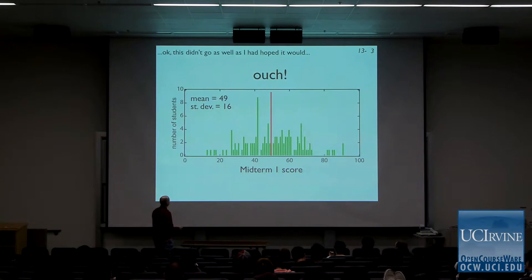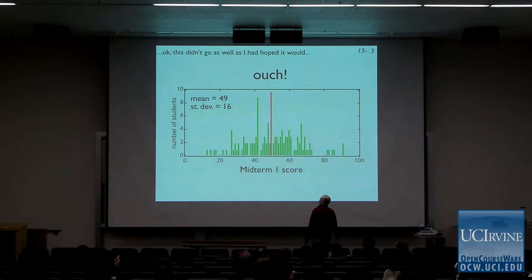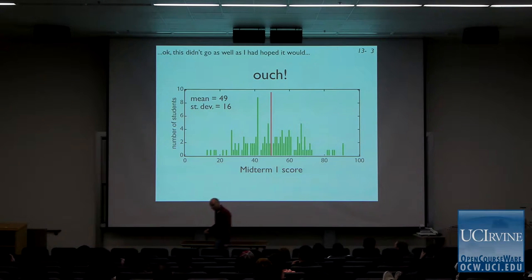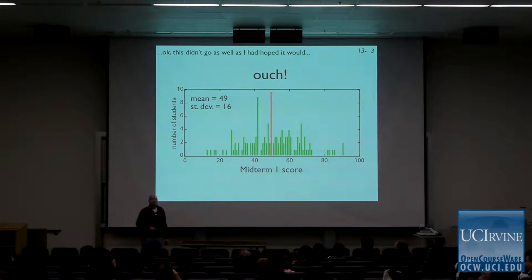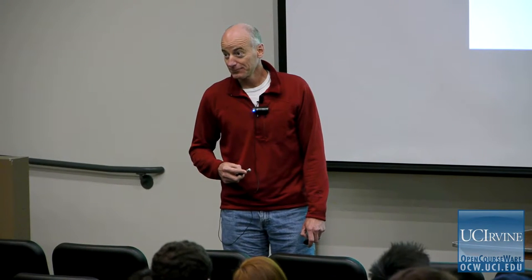This is what the histogram looked like for midterm one. I'm not any happier with it than you are. So if you did better than a 49, you actually did pretty well. In this class the mean should be a B. Of course that's not the case when you have a straight scale. These are A's, these are B's, and these are lower grades over here.